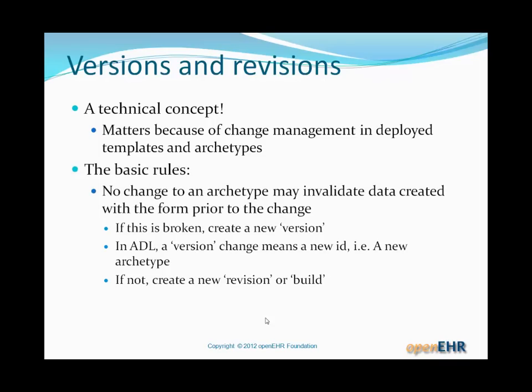So there are some basic rules. In ADL we have a concept of a version and also something called a revision. The basic rule is that no change to an archetype may invalidate data created with the form prior to the change. Sometimes breaking changes do have to be made, and in archetype land we call that a new version — a version in ADL means a new ID. On every archetype identifier you've seen, at the end you see .v1 or .v2 — that's the version number. So if you change from version one to two, you end up with a new identifier.